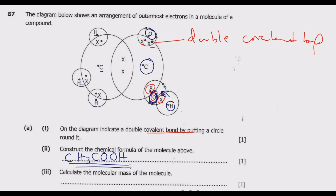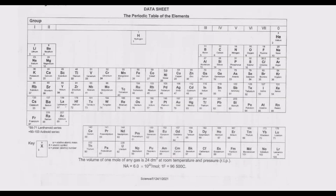Roman numeral 3: calculate the molecular mass of the molecule. To calculate the molecular mass we need to use the periodic table. The formula of the compound is CH₃COOH. The mass number of carbon is 12, so we have 12, plus hydrogen which is 1 — there are 3 hydrogens so 3 times 1 — then plus another carbon which is 12, then we have 2 oxygens, each with mass 16.